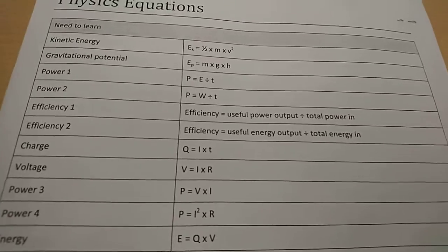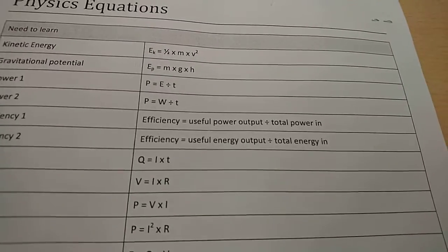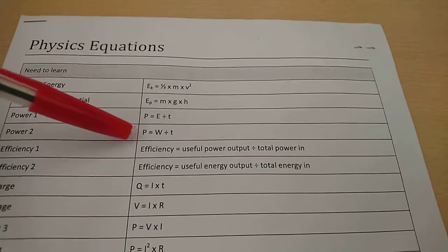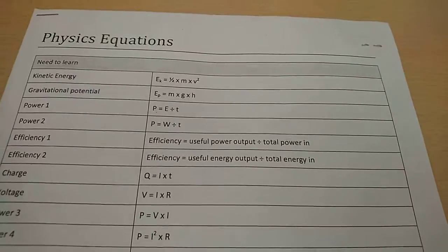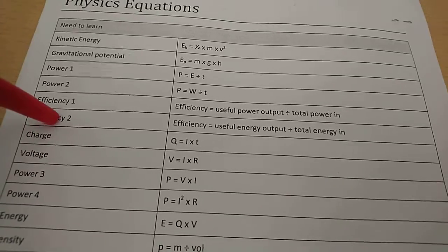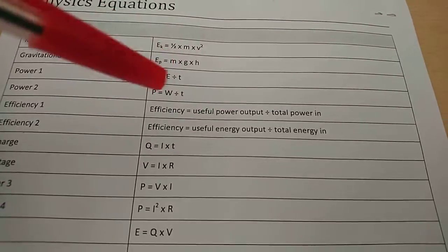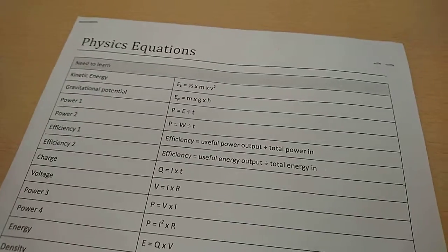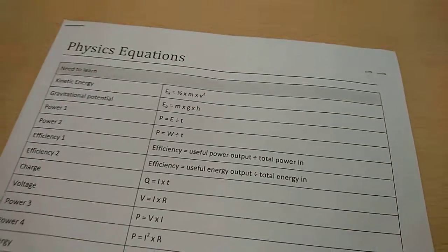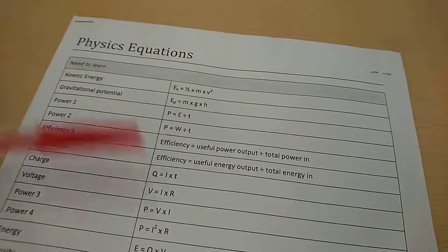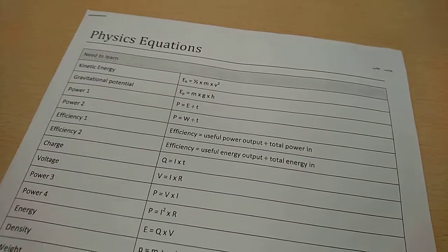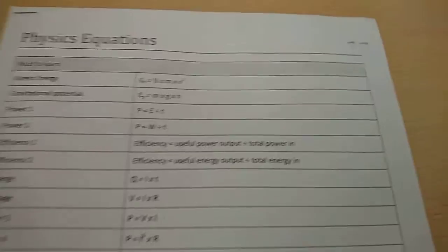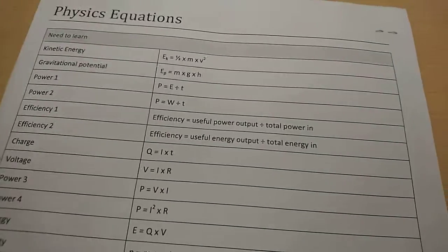So efficiency. Efficiency one: efficiency equals useful power output divided by total power in. That basically finds out how much of the stuff you put in is useful. And another thing for efficiency: efficiency equals useful energy output divided by total energy in. This just depends on what it says is going into it. If it says however much power is going into it, this is how you find out the efficiency. If it says how much energy or work done is going into it, you use this one. It's the exact same equation, just using different words.